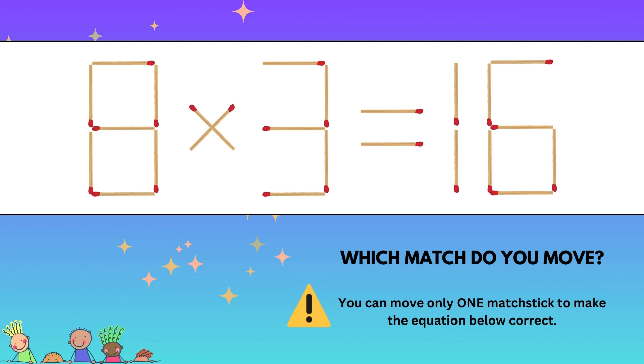So this matchstick puzzle actually has two possible answers. The first solution is to take the top right vertical match from the eight and shift it over to the six in the answer. What happens is the eight becomes a six and the sixteen becomes eighteen. Six times three is eighteen indeed. The second solution is to take the bottom vertical match from the three and shift it ever so slightly to the left, making it a two. You now have eight times two equals sixteen, which is also correct.